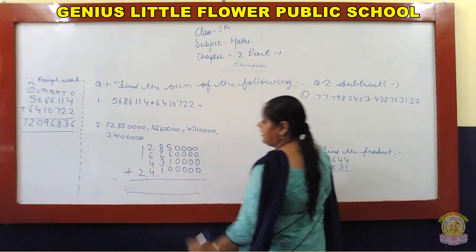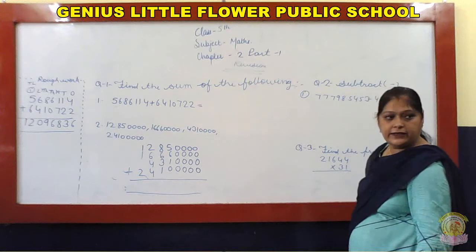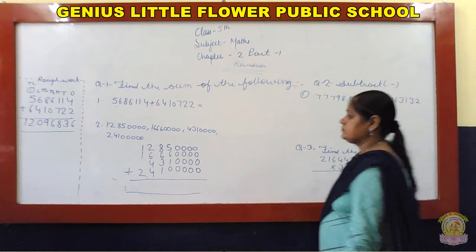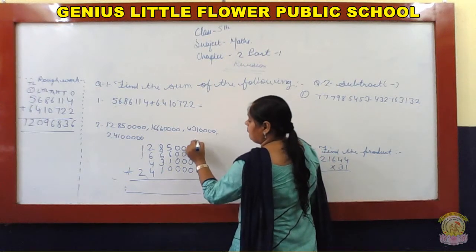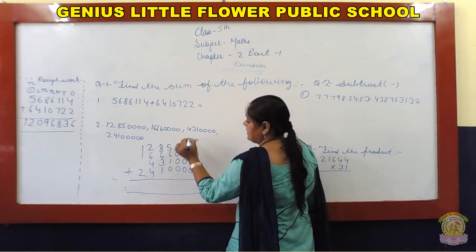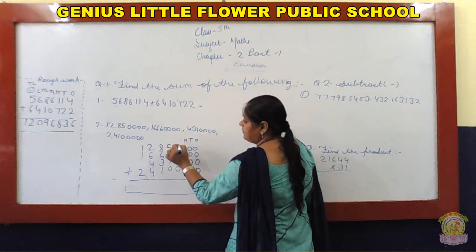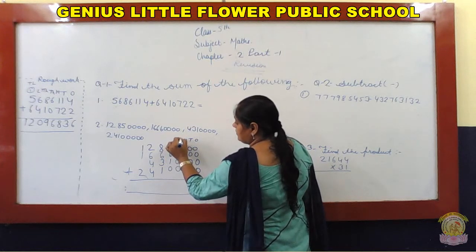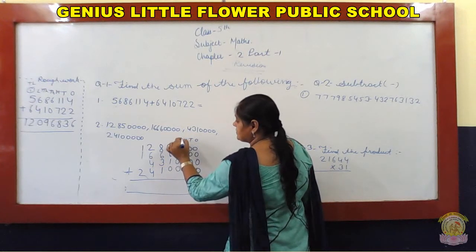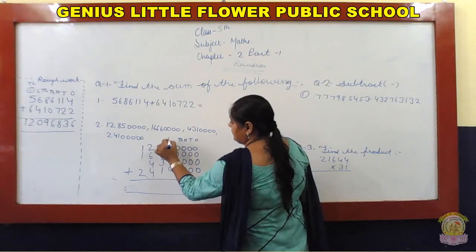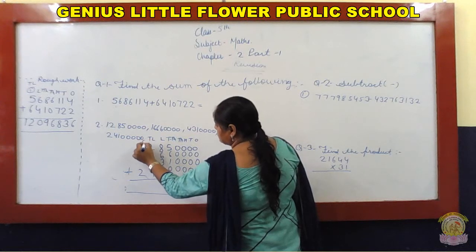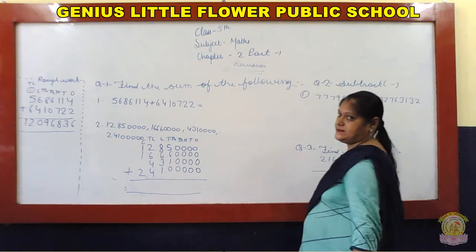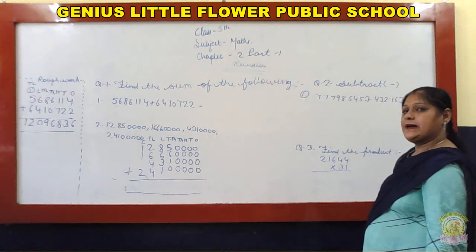Ismay bhi humne kya karna hai? Add karna hai. Ok student, ab dekhe, humare paas kitne places hai? Ones, tens, hundreds, thousands, ten thousand, lakh, ten lakh and crores place.